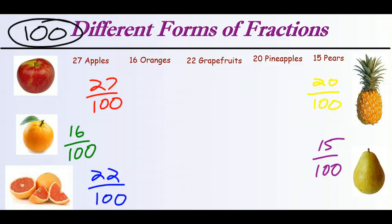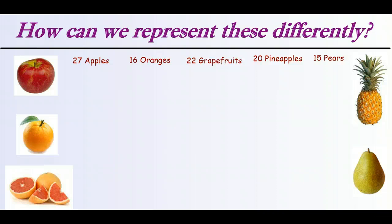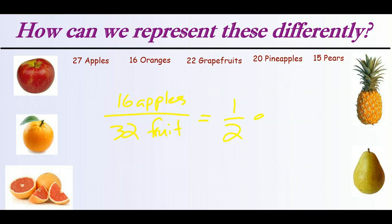But we have some fractions like 20 out of 100 that we might be able to make a little bit simpler — into a form that's a little bit easier to understand. For example, if we had a new basket of fruit where there were 16 apples out of a total of 32 different types of fruit, then 16 out of 32 is the same as half of the fruit being apples.